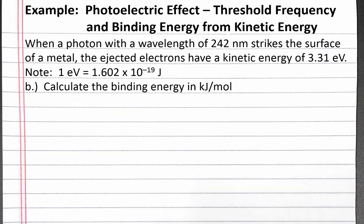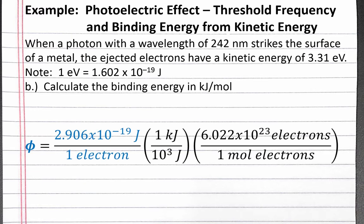In Part B, we want to convert the units for the binding energy to kilojoules per mole of electrons. We can do this using dimensional analysis. We'll start with 2.906 times 10 to the negative 19th joules per one electron. We convert from joules to kilojoules using metric prefixes, and from electrons to moles of electrons using Avogadro's number. Completing the calculation, the binding energy is 175 kilojoules per mole. Binding energies of metals are often given in units of kilojoules per mole because they're easier to work with.